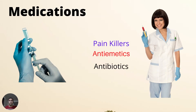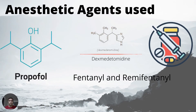Medications that anesthetists give inside the OT include painkillers to decrease pain and keep you comfortable, drugs to decrease vomiting sensations, and antibiotics to decrease the infection risk of the surgical site. The anesthetic agents commonly used worldwide are mainly two: dexmedetomidine and propofol, which cause sedation in patients. For pain relief, some centers use fentanyl and some centers in the UK and USA use remifentanil.